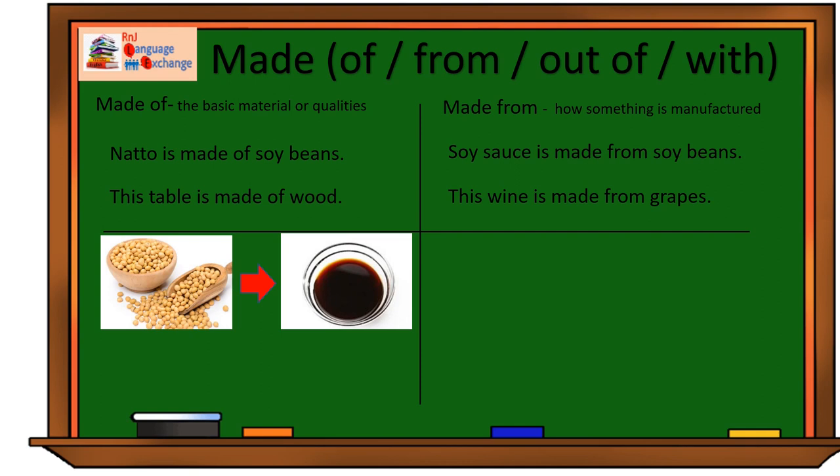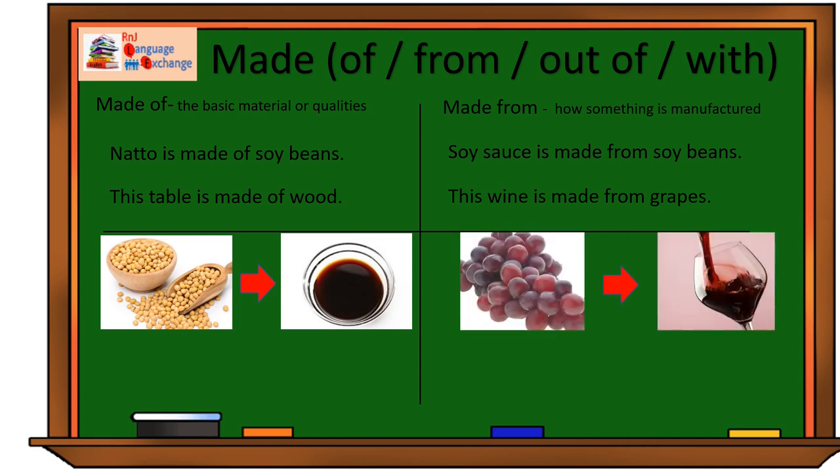Here's another example. This wine is made from grapes. You can no longer see grapes in there because it has undergone a process. I cannot see grapes. I can only see wine.